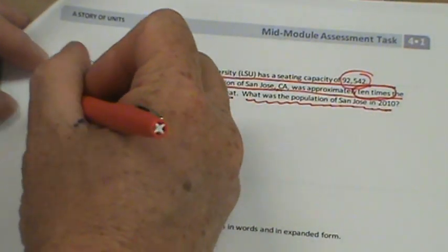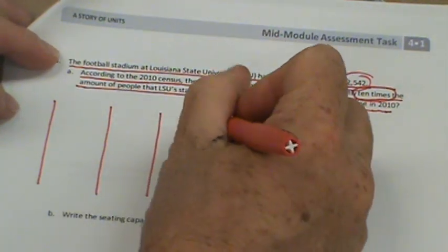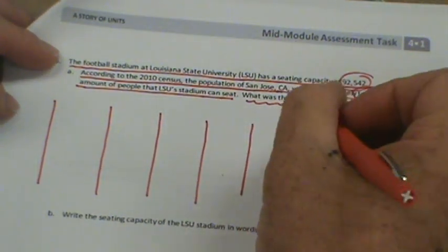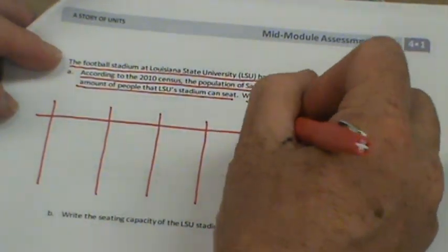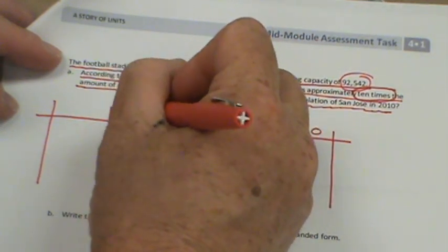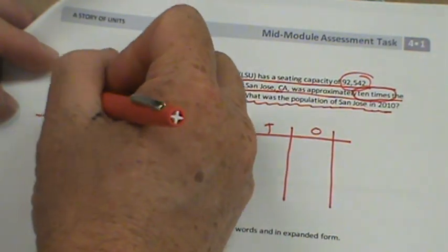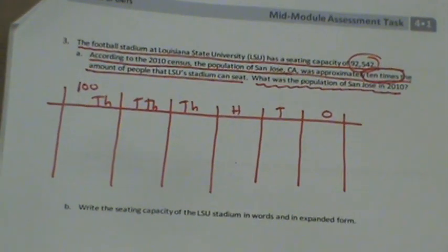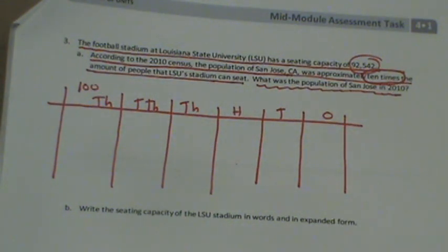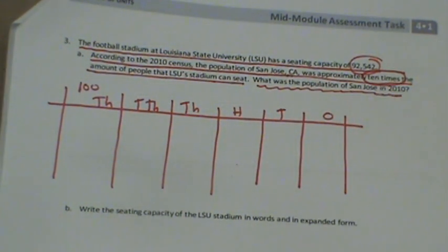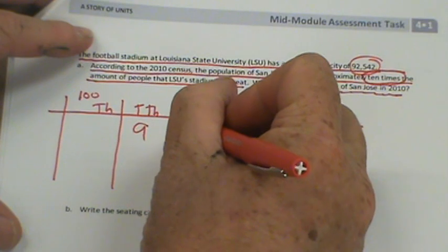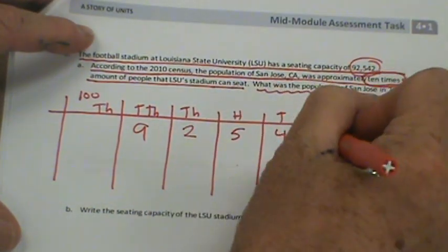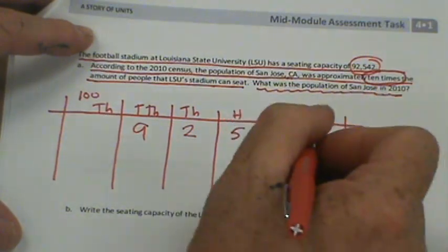So we're going to make a place value chart. Six bases. We have the ones, tens, hundreds, thousands, ten thousands, and hundred thousands. That's what that looks like. So make your place value chart. And you're going to put Louisiana's number, the number of people in the stadium. You're going to go like this. There's nine ten thousands, two thousands, five hundreds, four tens, and two ones. But how are you going to show ten times? You're going to sweep that way or go that way?